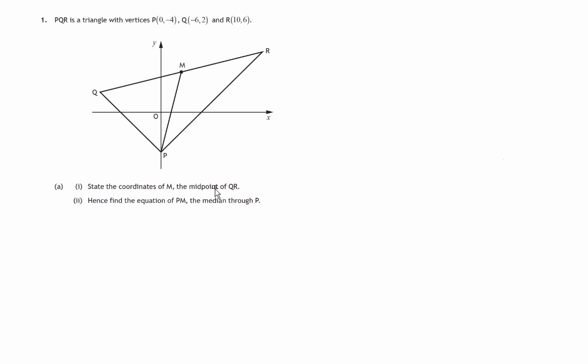In this question we're given a triangle PQR. We're told that M is the midpoint of side QR. We're asked to find M's coordinates and also find the equation of PM, the median of a triangle. Remember, the median goes from a vertex to the midpoint of an opposite side. Let's use this diagram to work through this question.